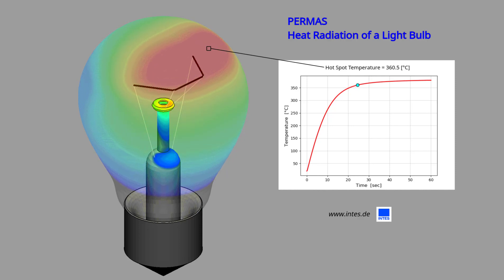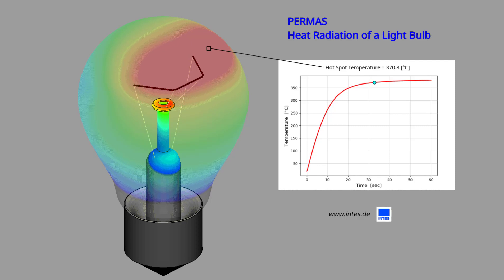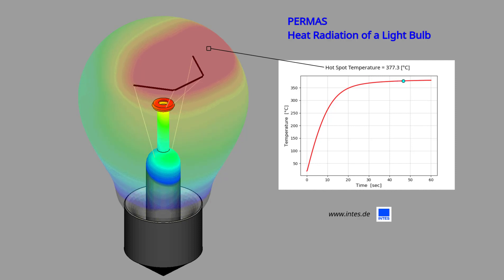The first 60 seconds after switch-on as a transient heating process of the light bulb is shown. The graph shows the current temperature of the hot spot. Temperature state is shown by color — from blue for cold, over green, to red for hot. The post-process makes it possible to show the result color on the glass as transparent and on all other surfaces as opaque. There was no mesh required for the vacuum.